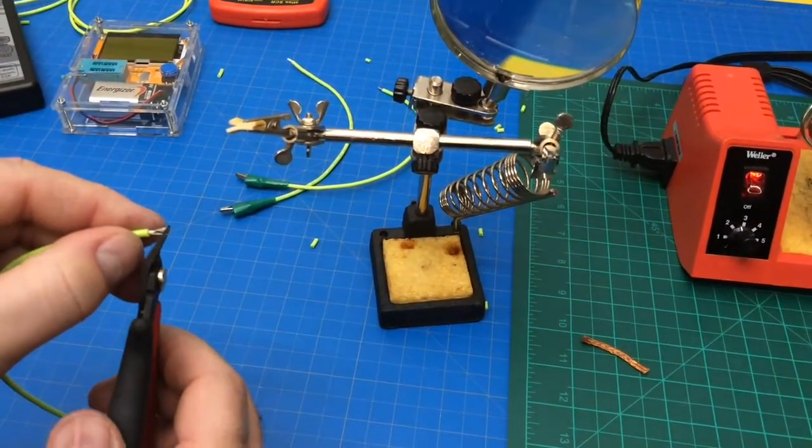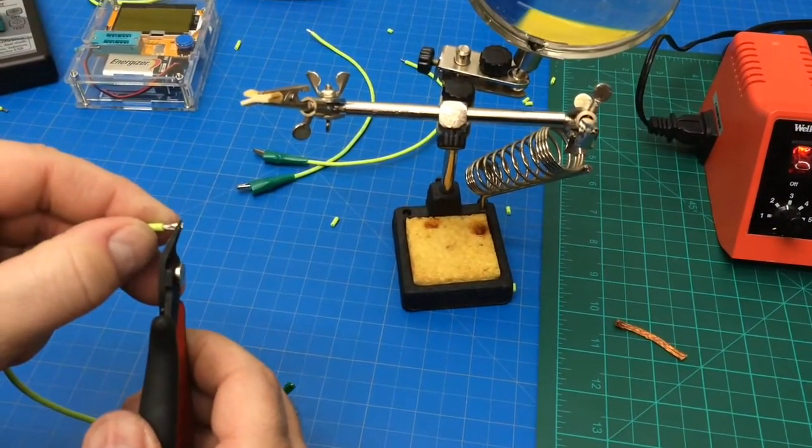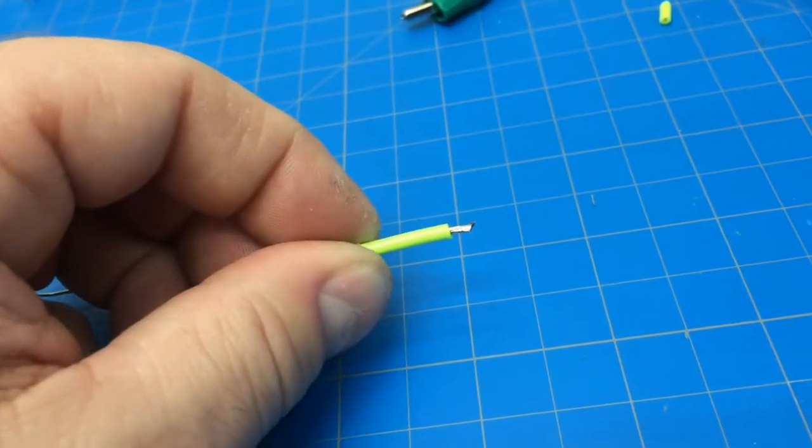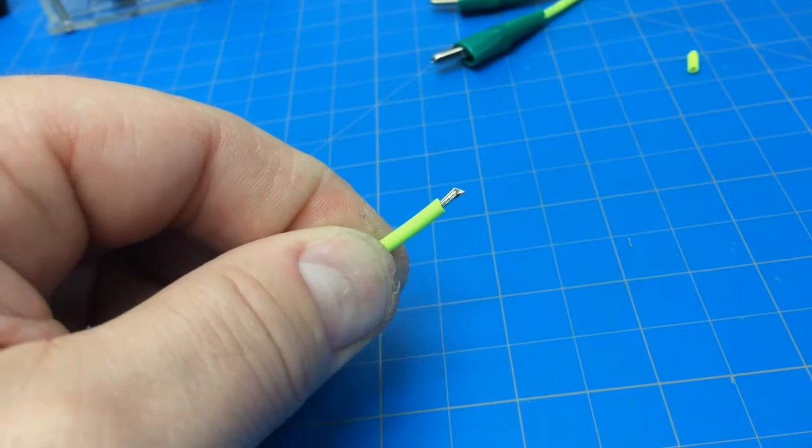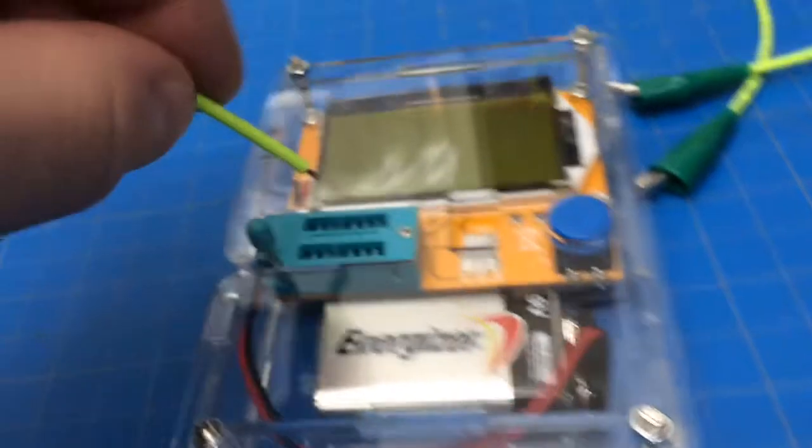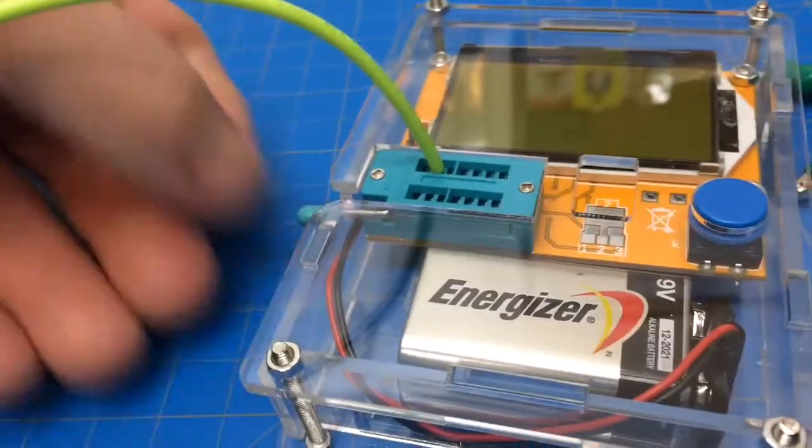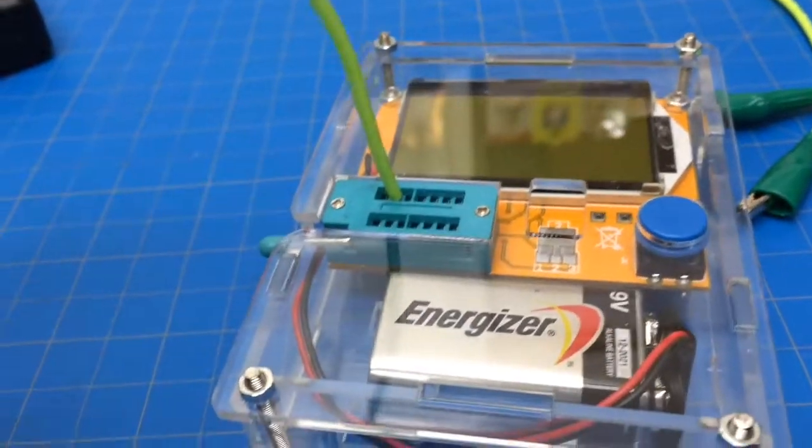Alright, then I'll just trim it down, slight angle. So now it's nice and short, it's tinned, it just has a slight angle, and it can go in here fairly easily. It's not too thick, before it was too thick.